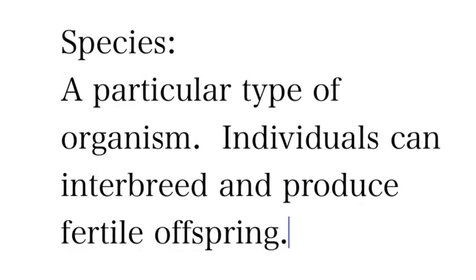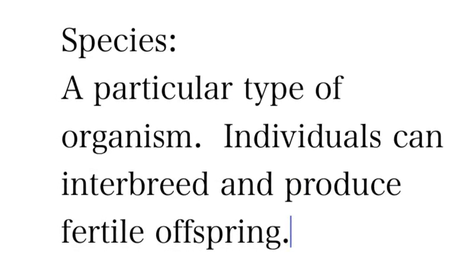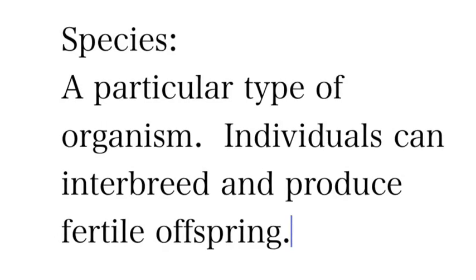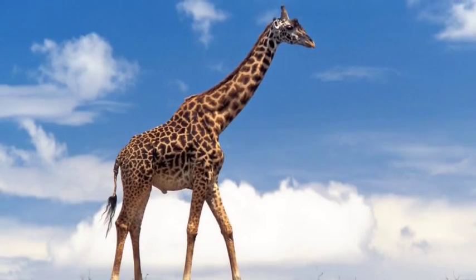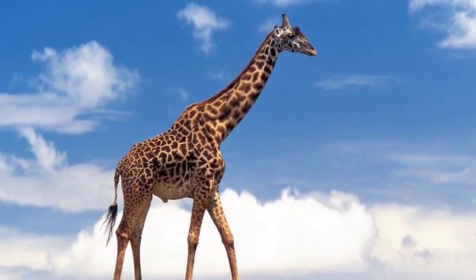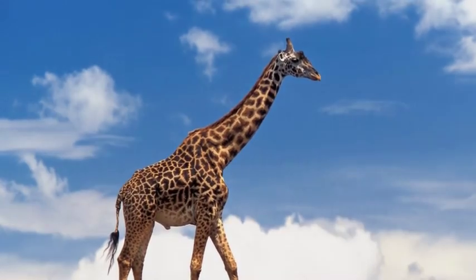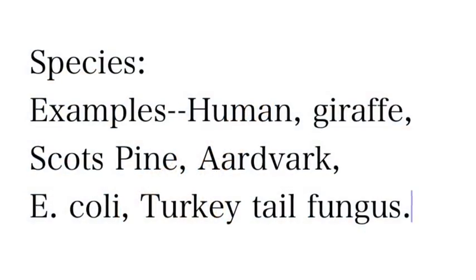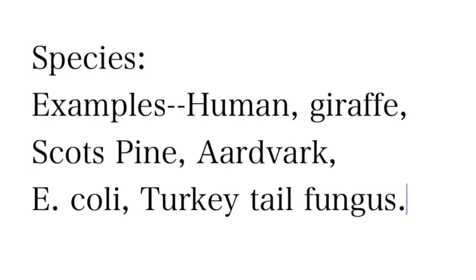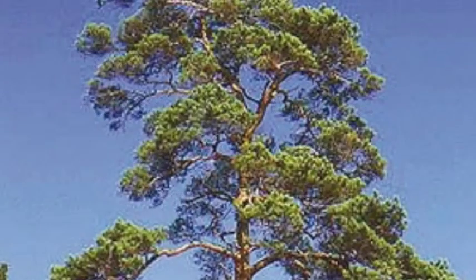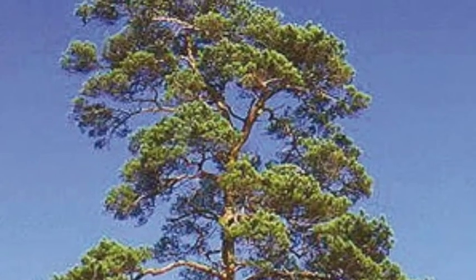The first term is species. We're really looking at how we classify life and the things that relate to life. A species is a particular type of organism. Examples include humans, giraffes, Scots pines, aardvarks, purple coneflowers, and E. coli bacteria — they're all different species.